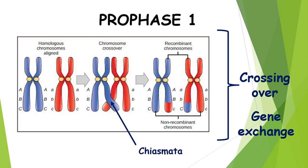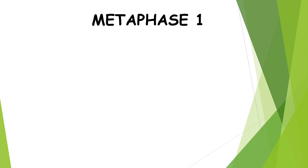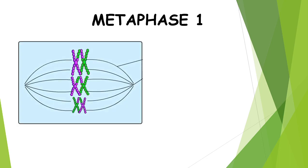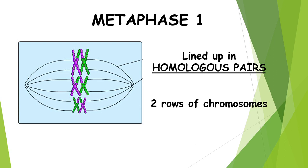That is prophase 1 for meiosis 1 — homologous pairs attaching, aligning, and crossing over occurring. Then we move to metaphase 1. Normally in metaphase, chromosomes line up on the equator, and that does happen, but in metaphase 1 of meiosis they line up in their homologous pairs. So instead of lining up chromosomes 1 to 46, it will be 1 to 23 on one side and the homologous paired chromosomes 1 to 23 on the other side — two rows of chromosomes. You can also see in the picture that chromosomes have purple with a bit of green and green with a bit of purple, showing they are genetically different.